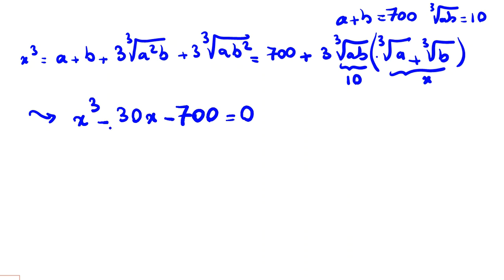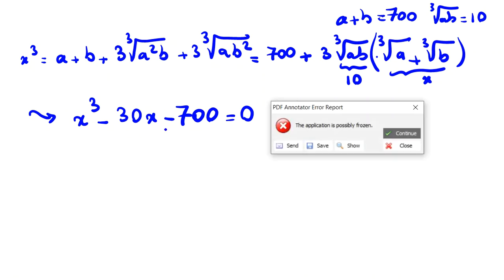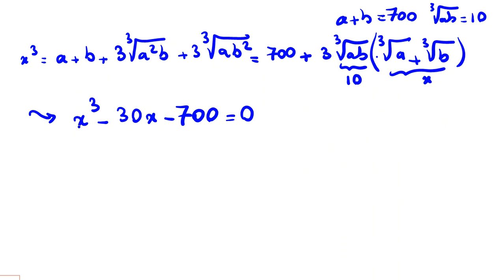The degree of this polynomial is more than two. For degree greater than two, in 90% of olympiad problems you should try to find rational roots. Since 10 divides the constant term 700, we can check x equals 10: that gives 1000 minus 300 minus 700, which equals 0. So x equals 10 is a root.